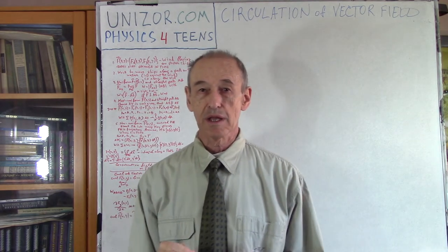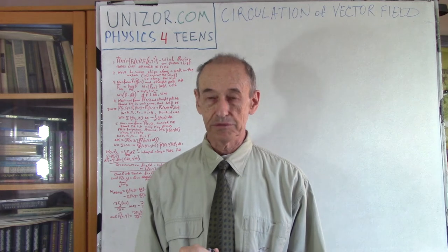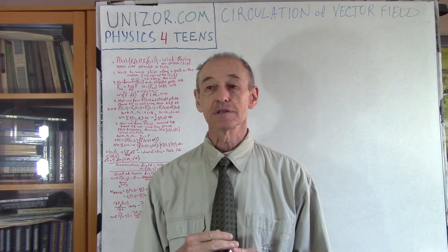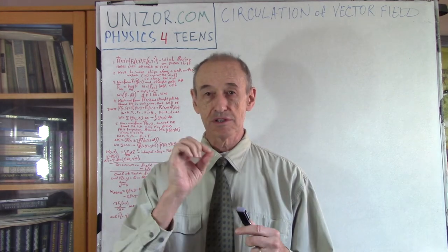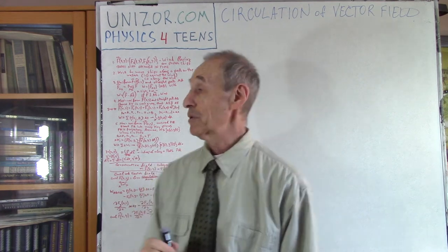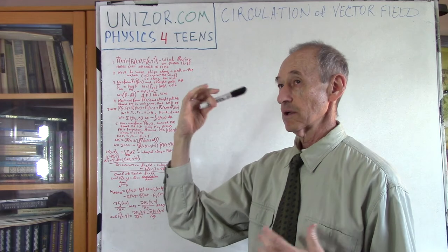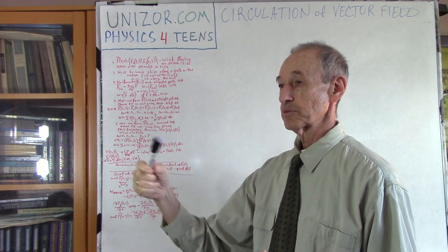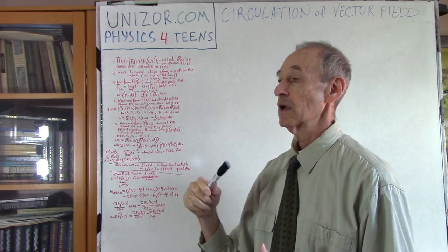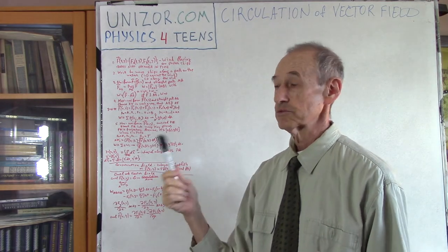Obviously you understand that circulation is somehow related to the circular character of the vector field — like a tornado, for example, if our vector field is three-dimensional velocities of each molecule of the air. This lecture is part of the course called Physics for Teens, the wave part, and in particular the topic of field waves, because we are gradually moving to the waves of the fields. We need to know the characteristics of field, including the circulation.